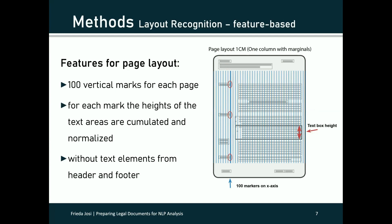The feature-based method that we have developed is shown schematically here. We generate 100 marker points for each page. For each marker point, we add the height of the text box that this marker crossed — you can see it marked here. We normalize the values with the highest value per page. We do not consider the top and the bottom of each page, because these text elements can cover a two column layout if there is a lot of information there.